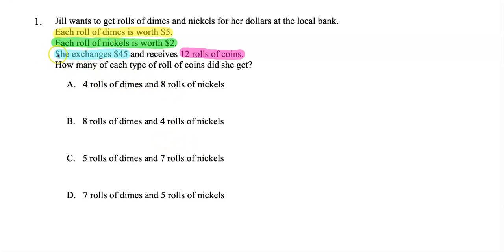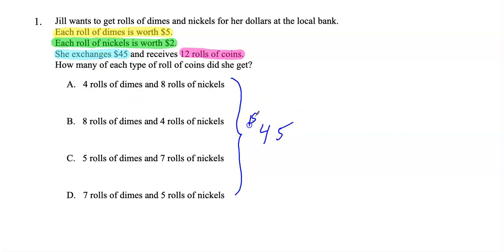Now another important piece of information is right here: she exchanges $45. That tells me that when she gets her rolls of coins, the total worth has to be $45. Let's look at answer choice A — if the 4 rolls of dimes and the 8 rolls of nickels total up to $45, then A is my answer.